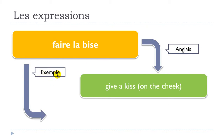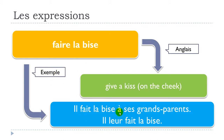Let's see one example: il fait la bise à ses grands-parents — he kisses his grandparents on the cheek. When you add the part à ses grands-parents, it becomes possible to replace this complément d'objet indirect with a pronoun. The pronoun to use here is leur, because it's third person plural: il leur fait la bise.